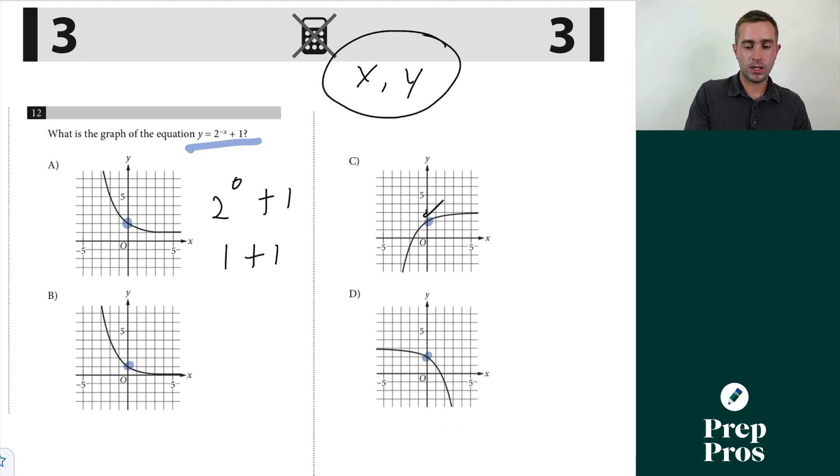This means we need a y-intercept of two so that's going to help us get rid of b. Now the next thing is I want to go back and plug in another point so I can work my way to my right answer.